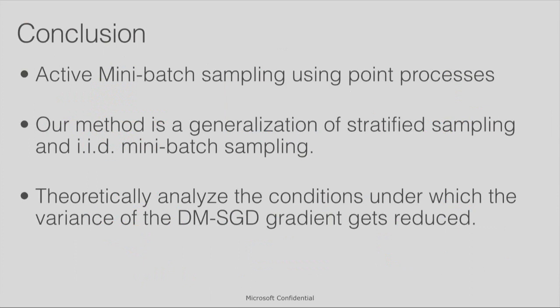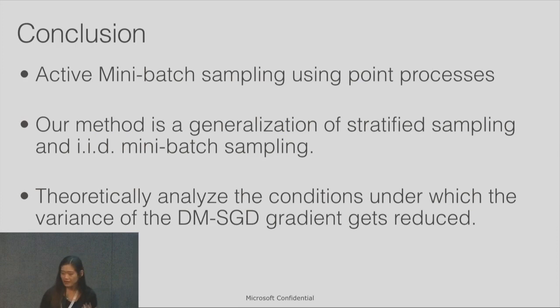To conclude, I propose active mini-batch sampling using point processes. Depends on your application need or your data property. We can adapt this to any density, any repulsive property, and we can reduce the variance. We show that our method is generalization of all this existing work, for example, stratified sampling and regular SGD. In the end, we actually prove theoretically there is a guarantee, like the condition to reduce the variance is this repulsiveness. As far as the point process is repulsive, we can reduce the gradient variance.